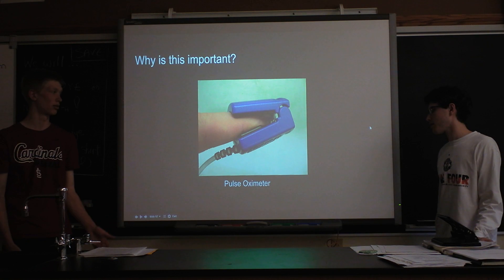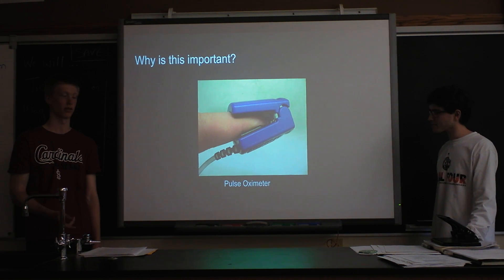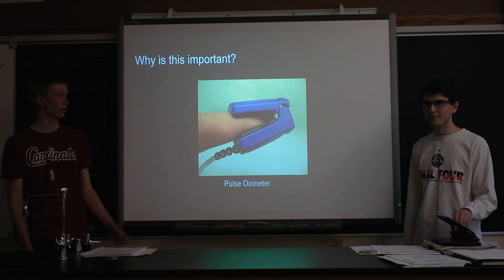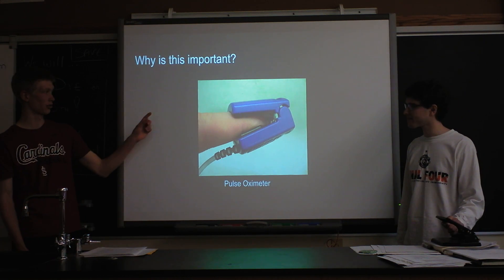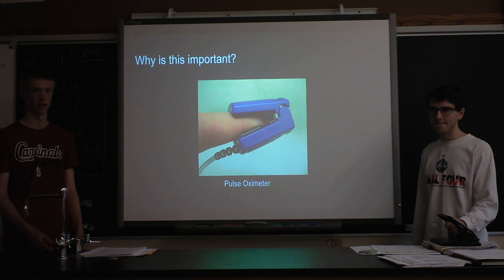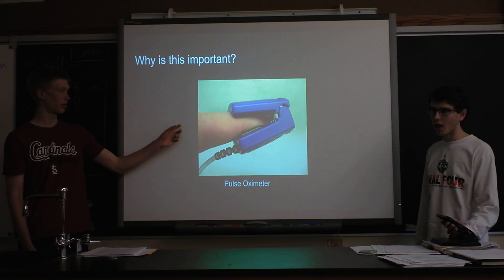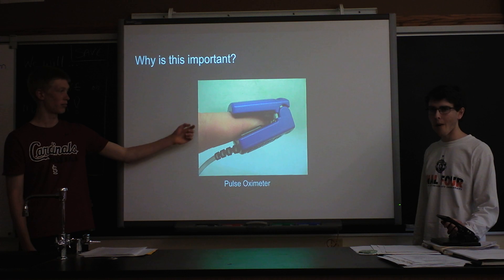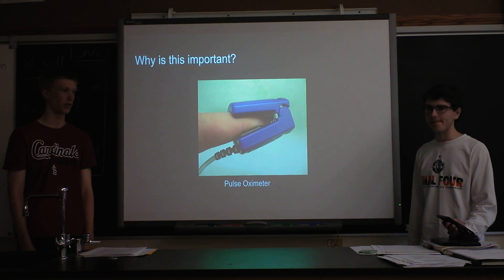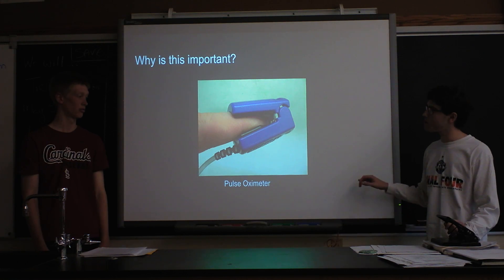Why is this important? Essentially, a pulse oximeter — a medical tool — functions on this same principle. It shines a little infrared light through the capillaries in the tip of your finger, finds the intensity of light on the other side, and from there calculates the oxygen levels in your blood.